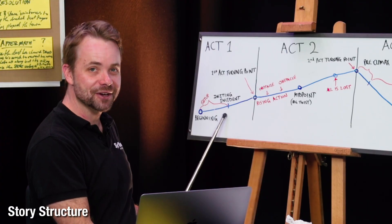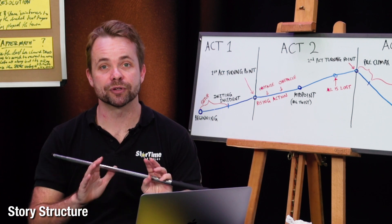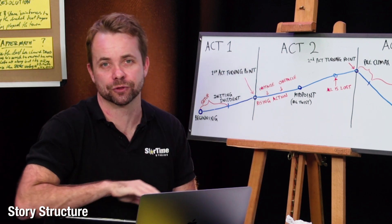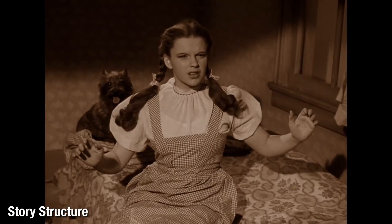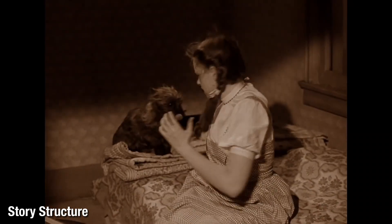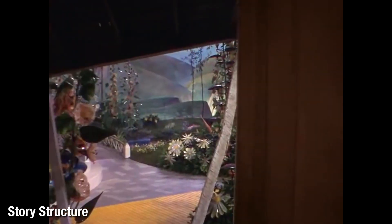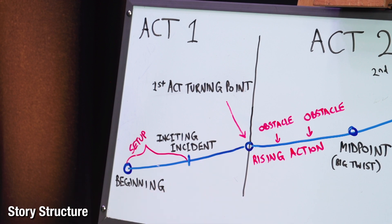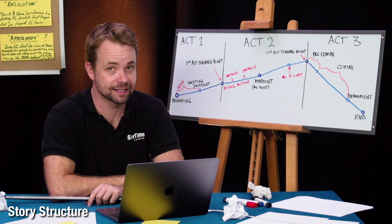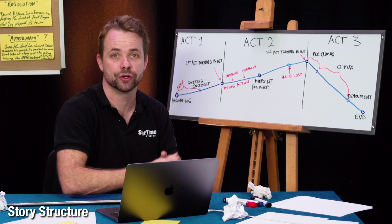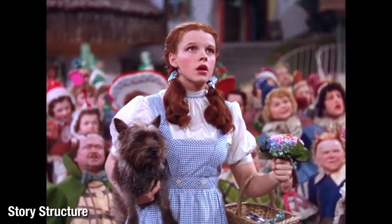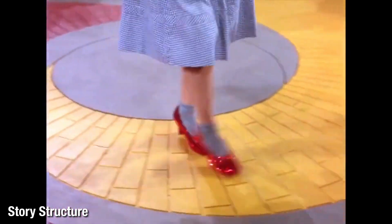Then we have the inciting incident — a moment that pulls your protagonist out of the ordinary world and thrusts them into the main action of your story. If we were to use the Wizard of Oz as an example, the inciting incident is the moment the twister takes Dorothy away from Kansas. Then we have the first act turning point, where your character has wrestled with what to do with the inciting incident and decides to embark on the journey. This is when we truly see what the film is about. Dorothy chooses to see the wizard and starts down the yellow brick road.